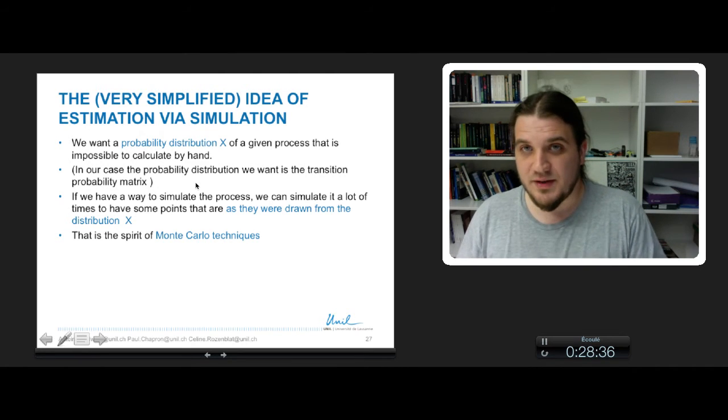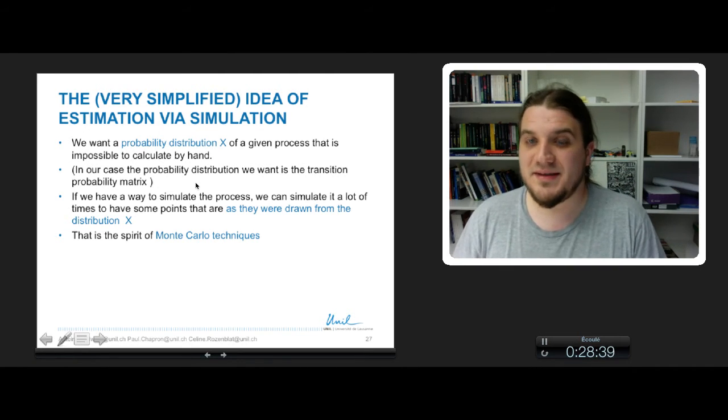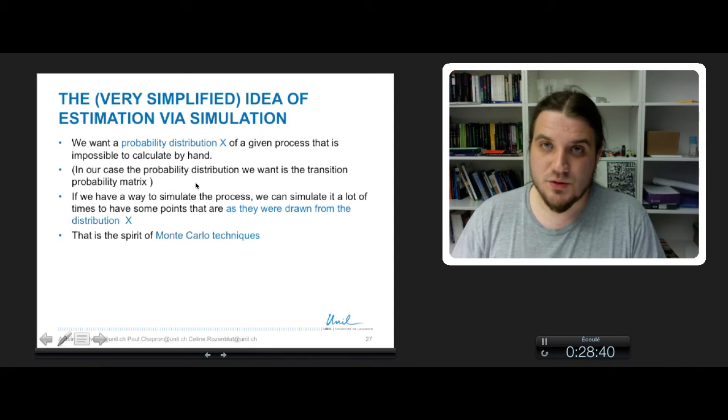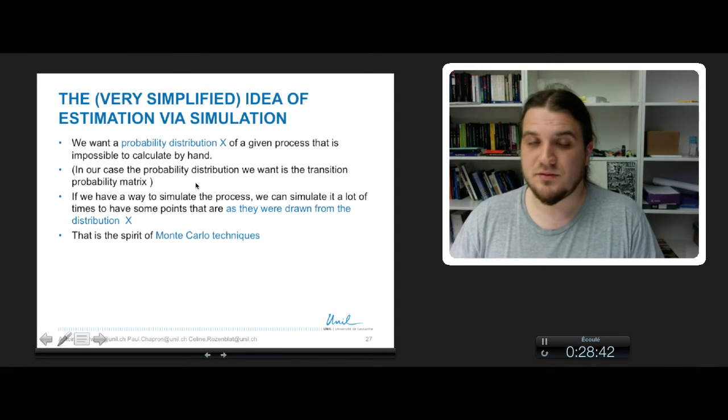you will reach the real probability distribution of your coin, which would be one half, 0.5.